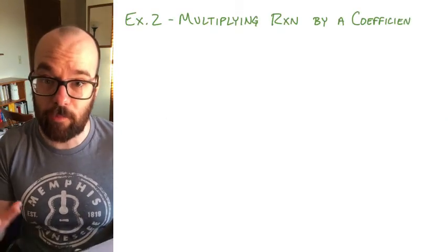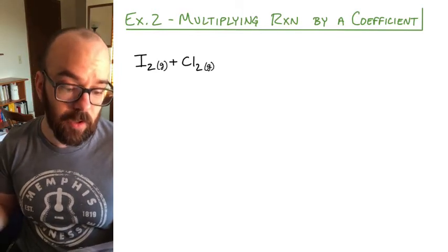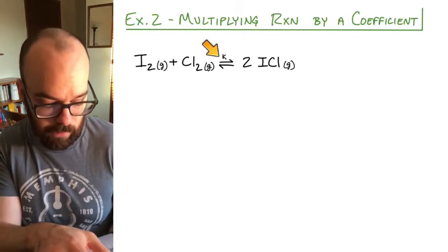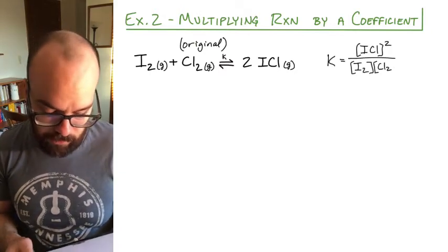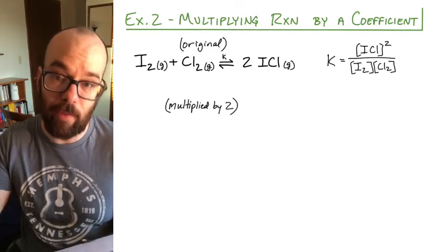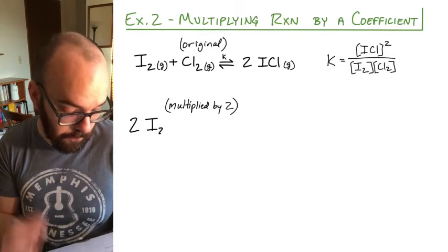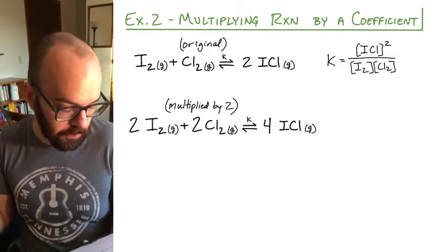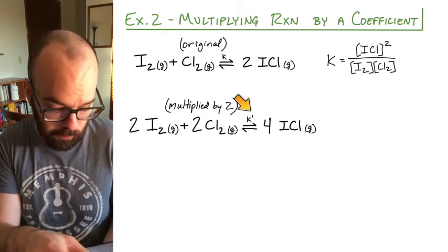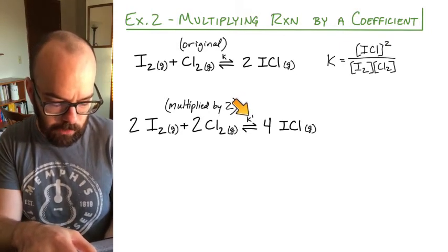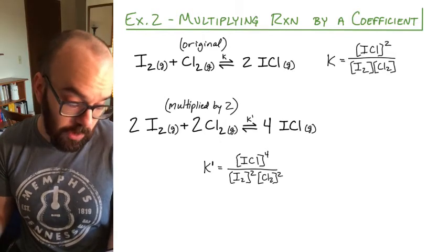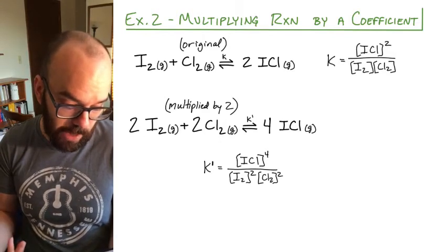Now let's look at our second example: what happens if you multiply a reaction by a coefficient? Starting with iodine gas plus chlorine gas in equilibrium with two ICl gas, we can write the K expression as ICl concentration squared divided by I2 and Cl2 concentrations. Now let's multiply this reaction by two: two iodine gas plus two chlorine gas in equilibrium with four ICl gas, giving us a new K value, K prime. The new K prime expression is ICl concentration to the power of four divided by iodine and chlorine concentrations both to the power of two.